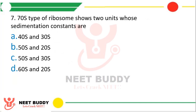Question number seven. The 70S type of ribosome shows two subunits whose sedimentation constants are: option A 40S and 30S, option B 50S and 20S, option C 50S and 30S, or option D 60S and 20S. The correct answer is option C — 50S and 30S.